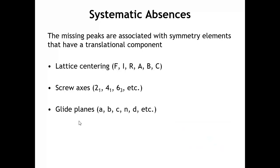But there are other symmetry elements like mirror planes, proper rotation axes, improper rotation axes, and inversion centers. Those kinds of symmetry elements do not produce any systematic absences. So by looking at the peaks that are missing, we cannot say anything definitive about whether those symmetry elements are present or not.